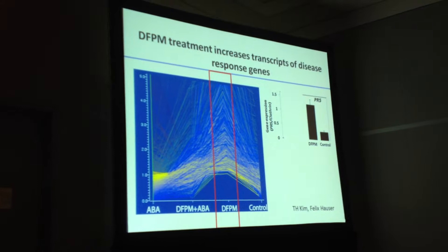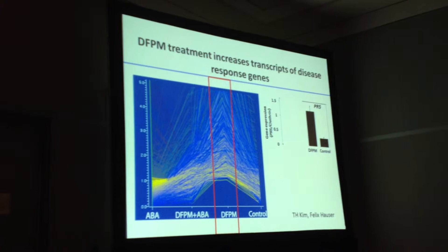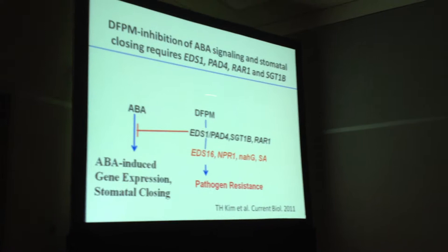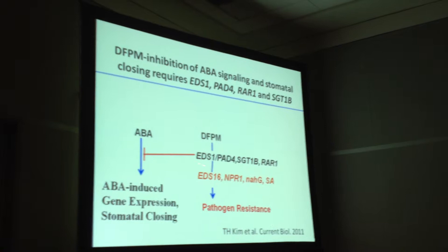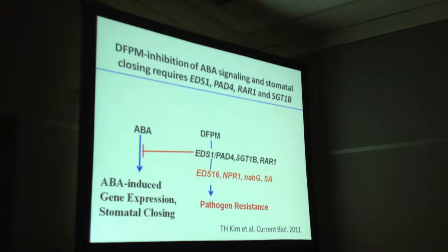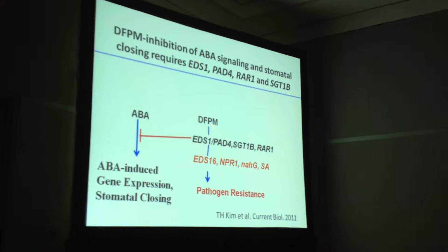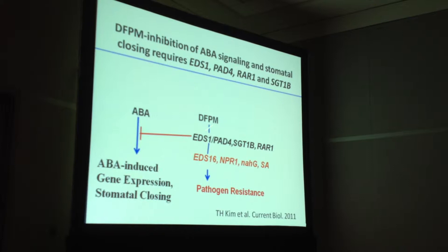I'll make a long story short because we published a first paper last year. After examining many pathogen signaling mechanisms and pathways, the result is: some early effector-triggered immune signaling mechanisms — the earliest known after resistance proteins — EDS1 and PAD4, two proteins of less well-understood biochemical function, and SGT1B and RAR1, two co-chaperones affecting resistance protein stability — if you use loss-of-function alleles of any of these, the ability of DFPM to inhibit ABA signaling is impaired.